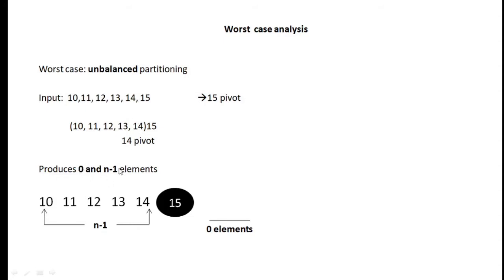If we take the first or last element as pivot on a sorted array, we end up with zero and n-1 sub-problems. However, if we take the middle element as pivot, the list will be divided into two parts. Taking the middle element as pivot reduces the worst case time complexity compared to taking the first or last element when the array is sorted.